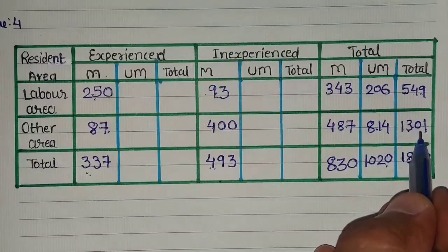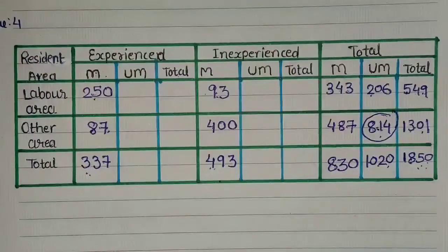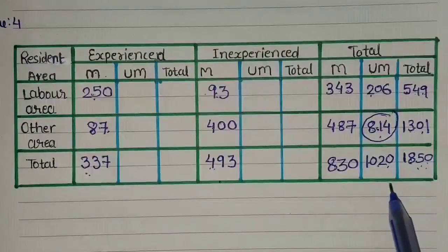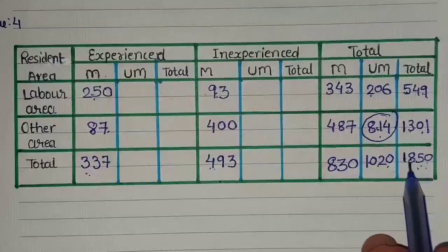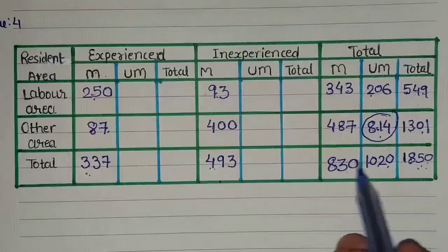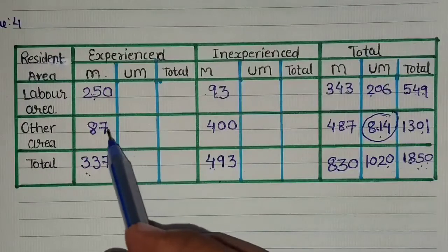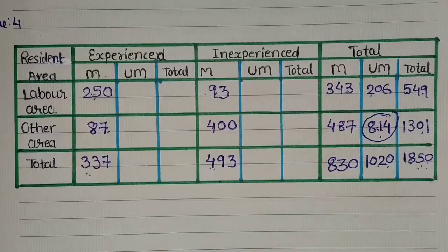Friends, आप देख सकते हैं इस type के sums में ज़्यादातर detail हम minus करके ही find कर लेते हैं। बहुत सी details ऐसी हैं जो sum पढ़कर लिख सकते थे, लेकिन हमने common sense से total में से एक attribute minus किया तो दूसरा attribute automatically मिल गया। अभी हमारे पास और कोई detail नहीं है जिससे बिना sum पढ़े table पूरी कर सकें, तो चलिए आगे sum का study करते हैं।